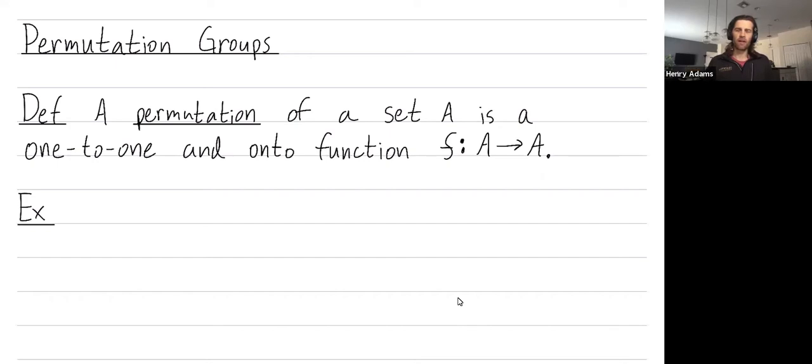But another way of thinking about them is that any finite group can be seen as a subgroup of a permutation group. So if you understand permutation groups really well, then in some sense you understand all groups really well.